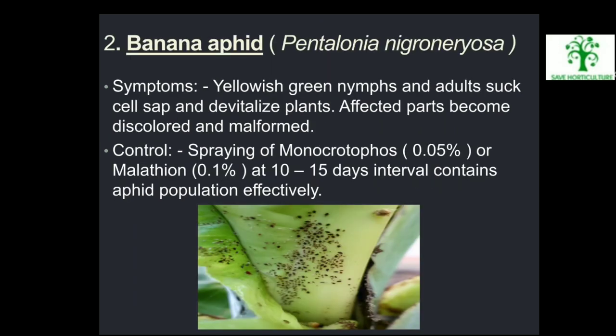Second pest — Banana Aphid (Pentalonia nigronervosa): Symptoms: Yellowish-green nymphs and adults suck cell sap and debilitate plants. Affected parts become discolored and malformed. Control: Spraying of monocrotophos 0.05% or malathion 0.1% at 10 to 15 days interval controls aphid population effectively. Symptoms of banana aphids are visible in the picture.